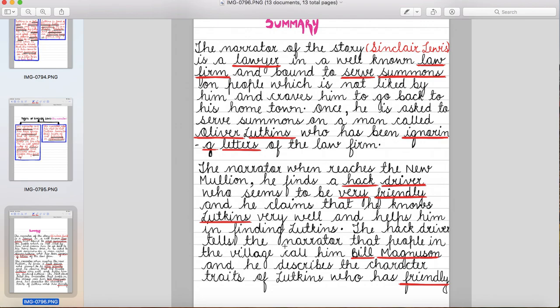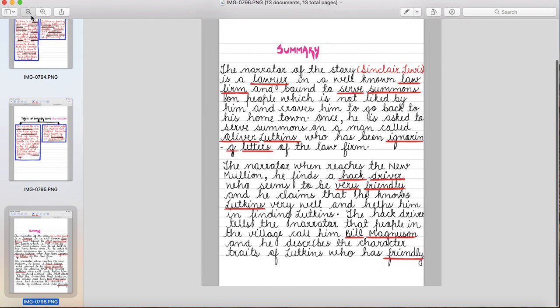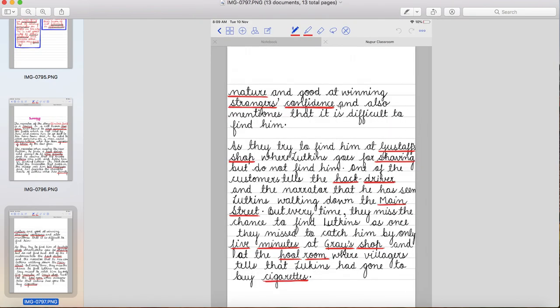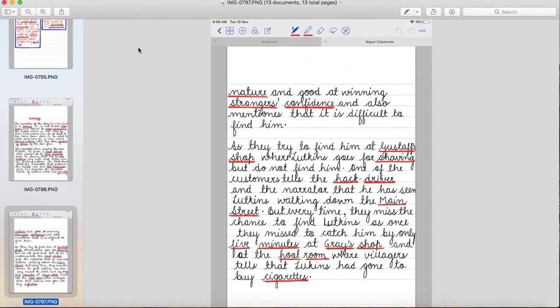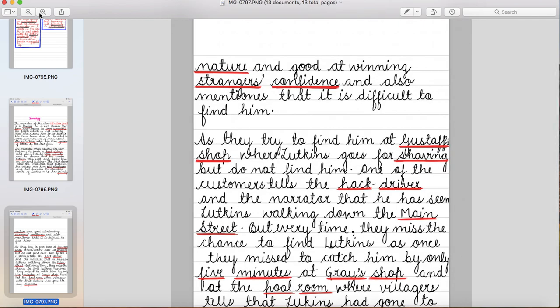The hack driver tells the narrator that people in the village call him Bill Magnuson and he describes the character traits of Lutkins who has friendly nature and good at winning strangers confidence and also mentions that it is difficult to find him.